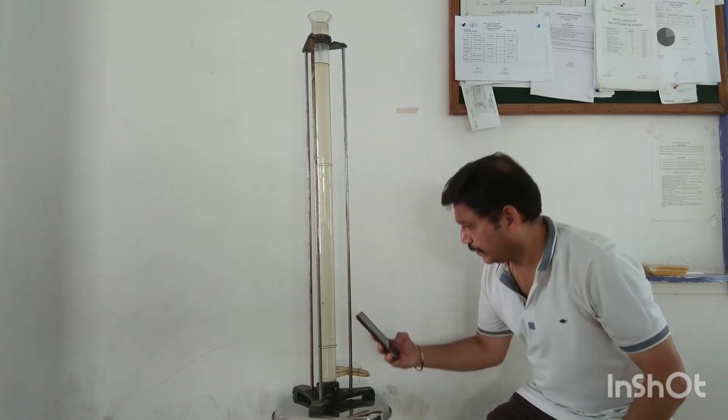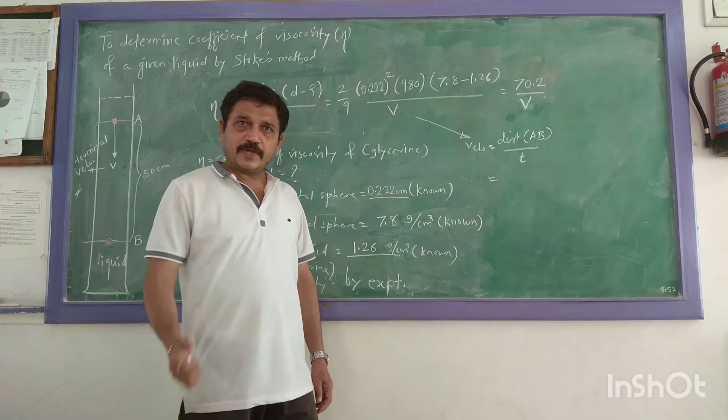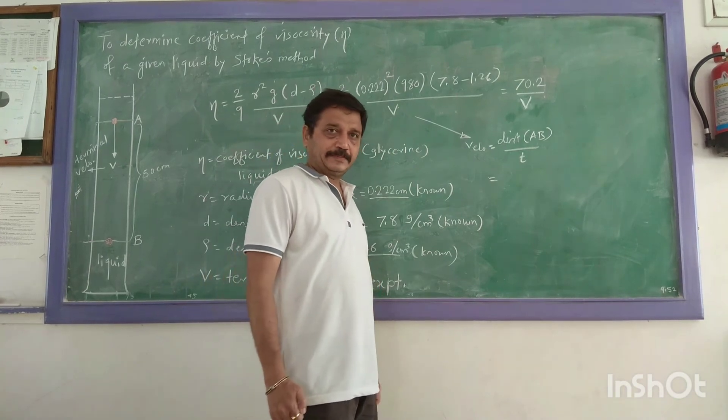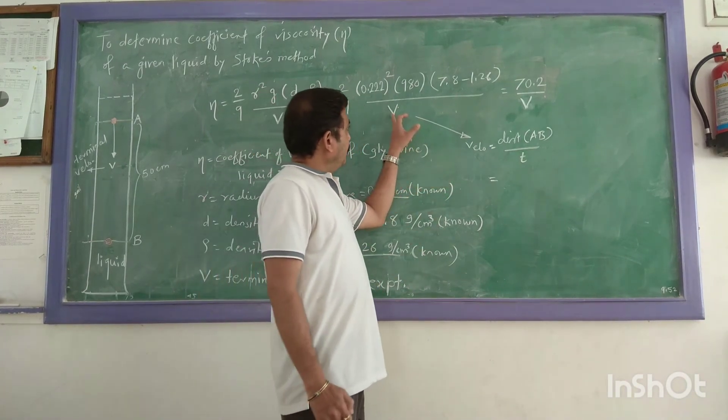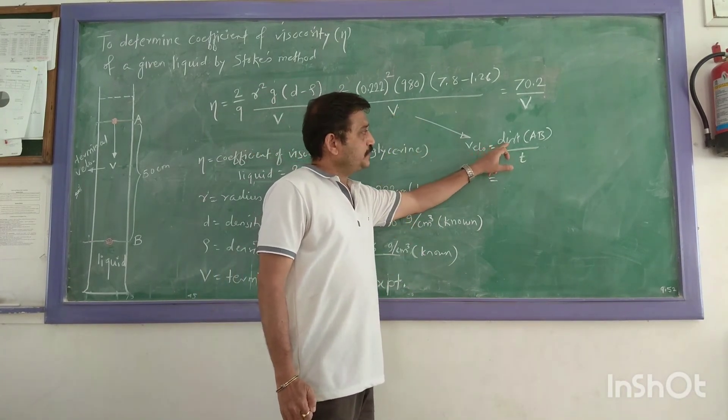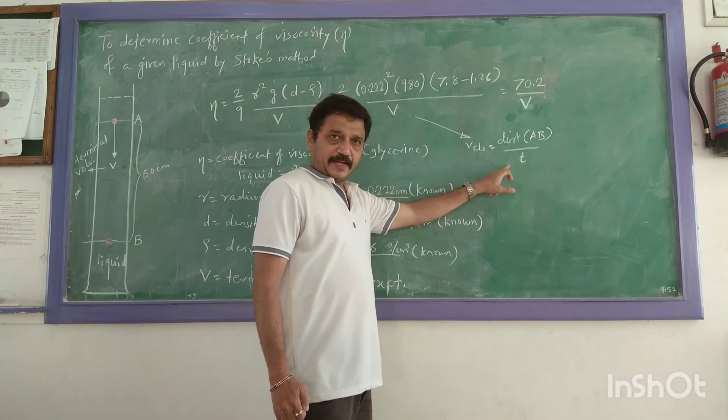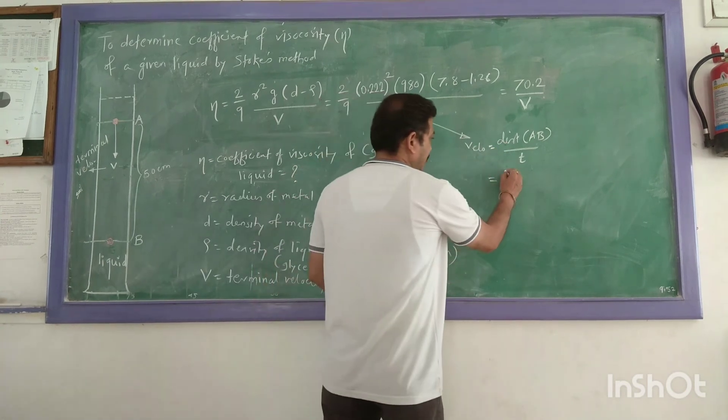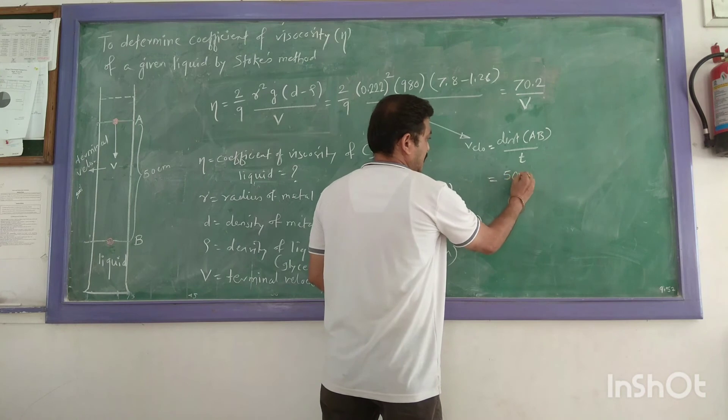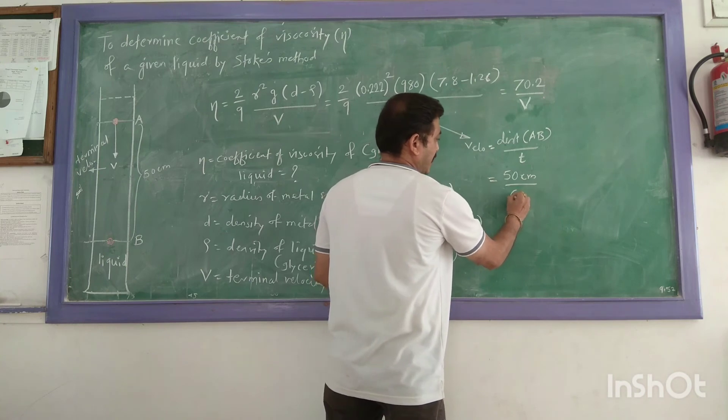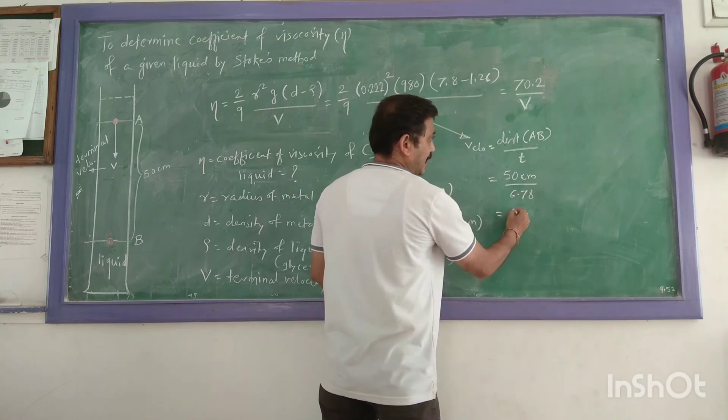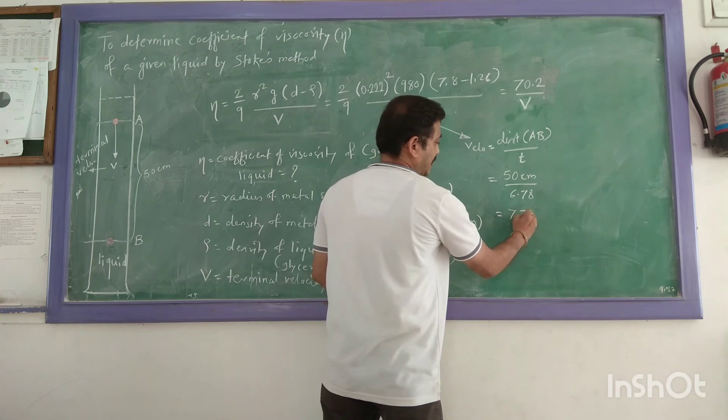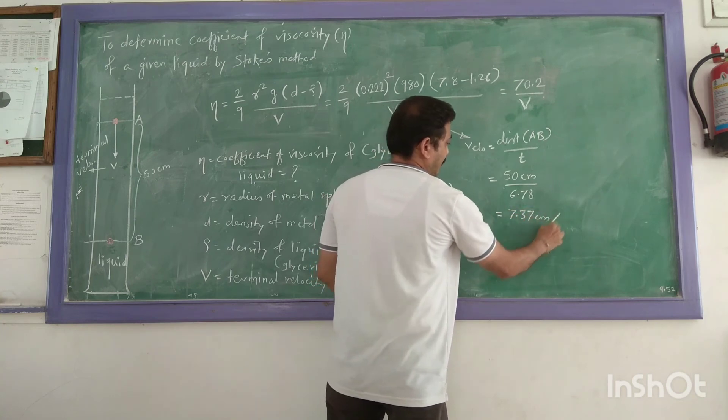Start. Stop. OK, now come to the calculation part. Terminal velocity is equal to distance AB divided by time taken. Distance AB—that is the marking distance—distance between the two markings is 50 cm, divided by time taken is 6.78 seconds. And the answer is 7.37 cm per second.